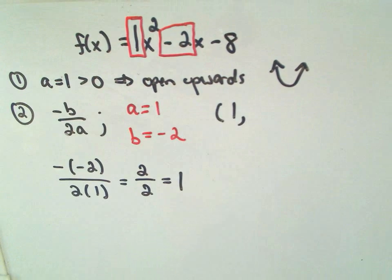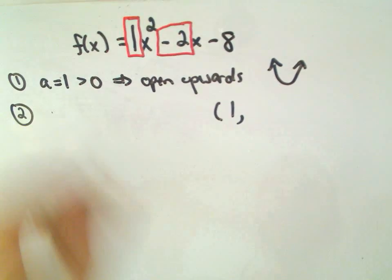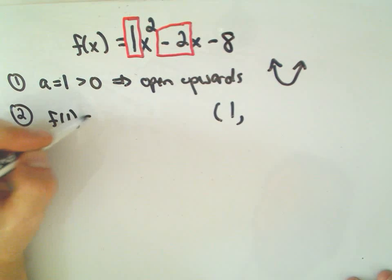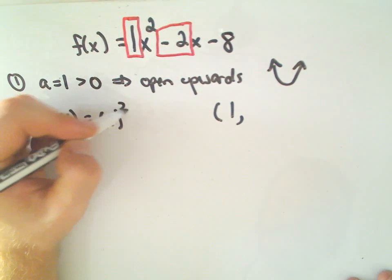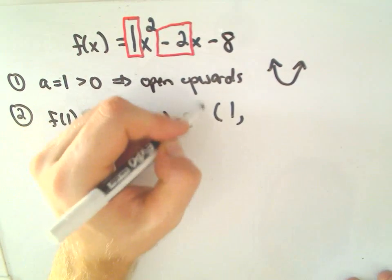Okay, so that's the x-coordinate of the vertex. And now all I have to do is plug that back into my function to get the y value. So to get the y value, we just plug in 1. So f(1) will be 1² - 2(1) - 8.